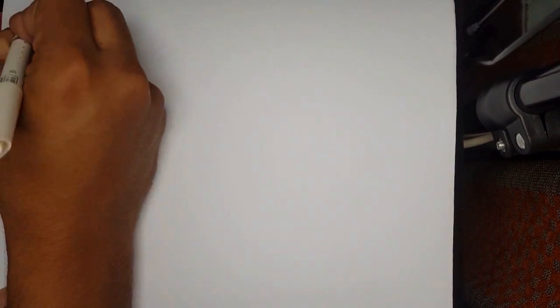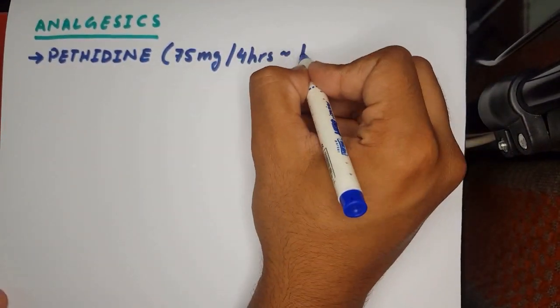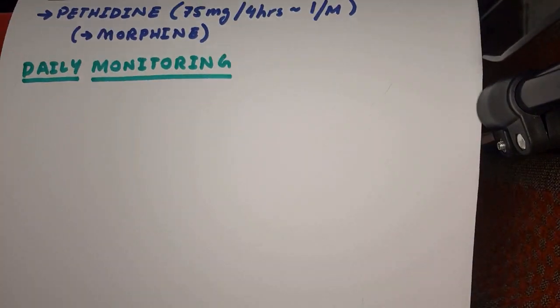For the pain, we use pethidine at around 75 to 100 mg per four hours via the muscular route, or morphine as an alternative.